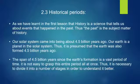Our solar system came into being about 4.5 billion years ago. Our earth is a planet in the solar system, so it is presumed that the earth was also formed 4.5 billion years ago. The span of 4.5 billion years since the earth's formation is a vast period of time, and it is not easy to grasp this entire period all at once. Thus, it is necessary to divide it into a number of stages in order to understand it better.